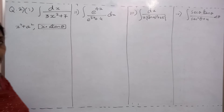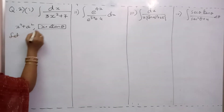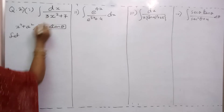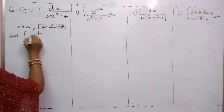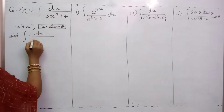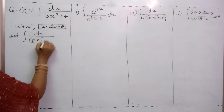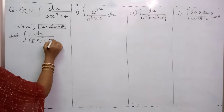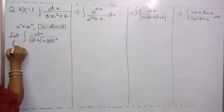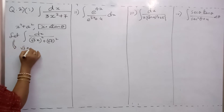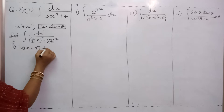This is the rule. So here, what we have to assume: dx by this 3x — can I write it as (√3·x)² plus (√7)²? So now, what is my substitution here? √3·x equal to √7 tan θ.